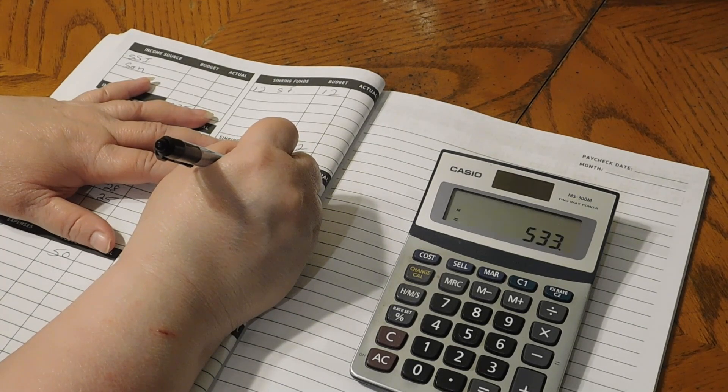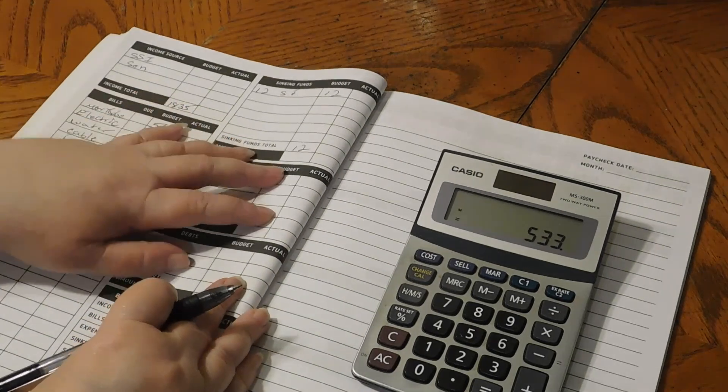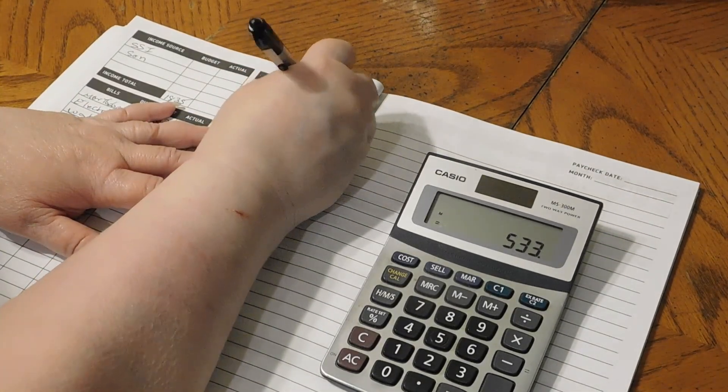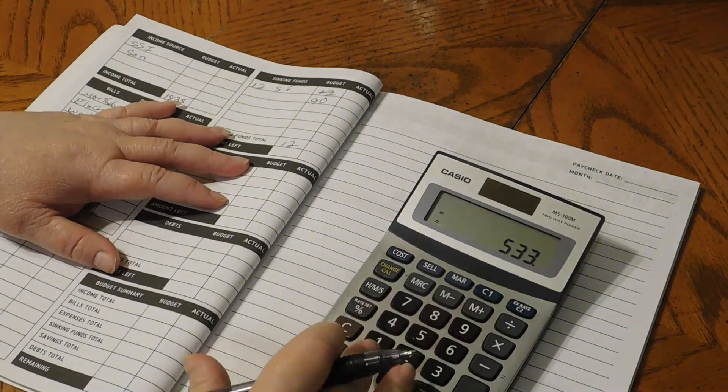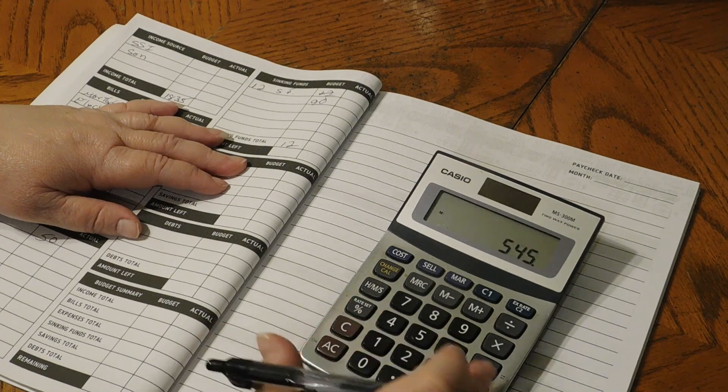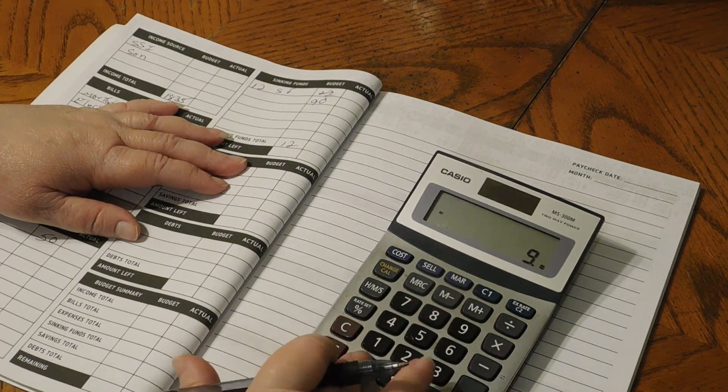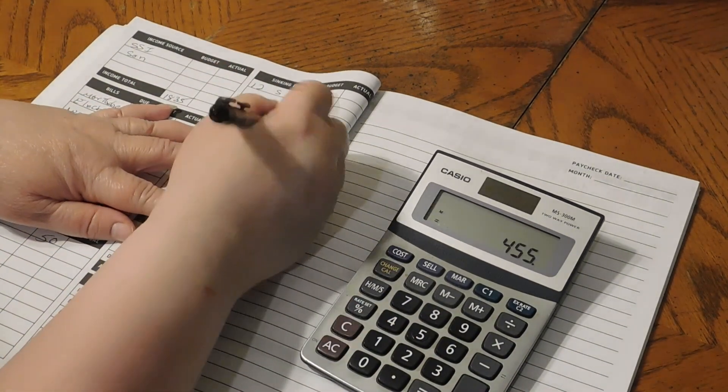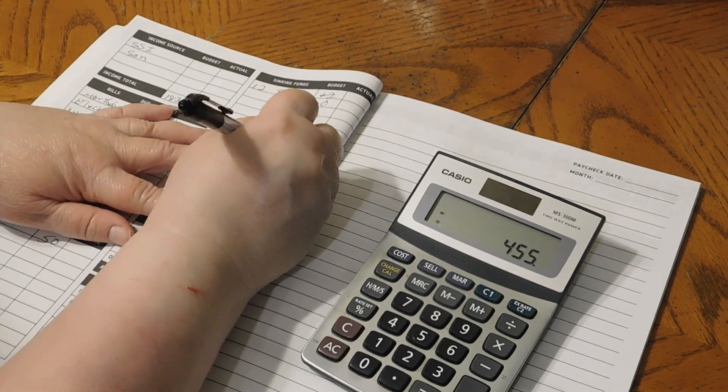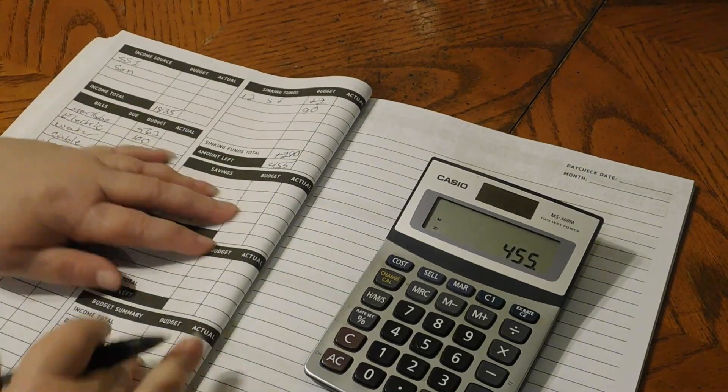Oh no, I did that wrong. It's $90 for sinking funds. Cross that out. $90 for sinking funds. So we had $545 minus $90 would be $455.